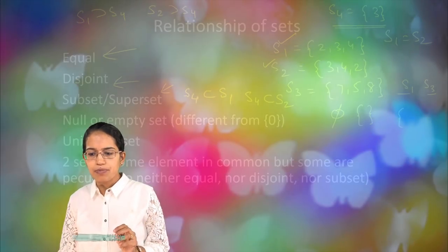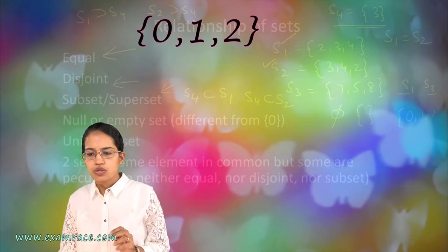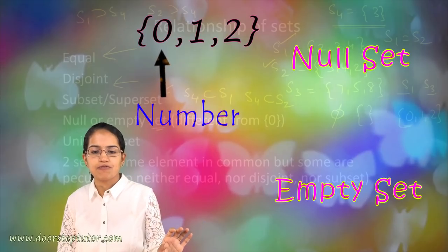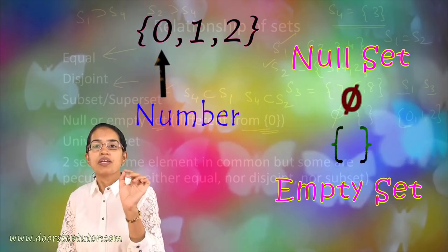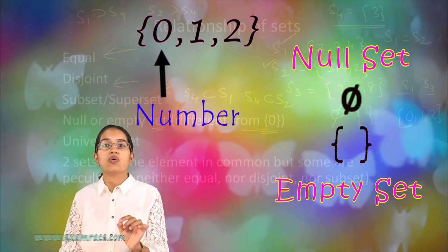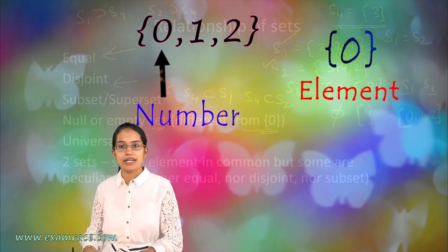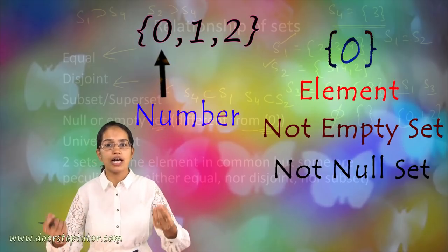However, if I put 0, 1, 2 here, 0 signifies a number. Null set and an empty set is very different from marking within the brackets 0. When I am marking 0, I am talking about 0 as an element. It's not empty, it's not null, it's not void.